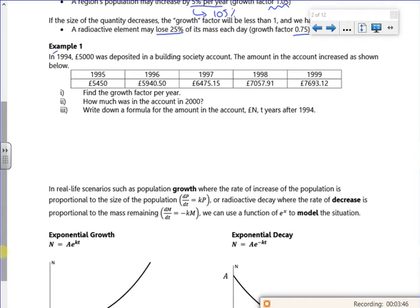Let's have a look at an example. It says in 1994 there were five thousand pounds deposited and then it goes up by those amounts. So it says find the growth factor per year. Let's go with the jump from 1995 to 1996. So I've got 5940.60 divided by 5450, and that should give me 1.09. So that's my growth factor, nine percent per year.